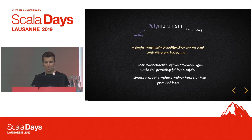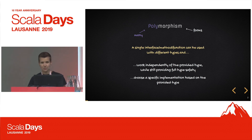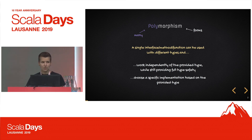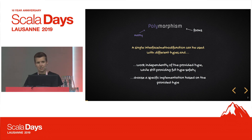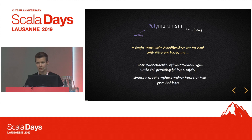To begin with, a short definition of the word polymorphism, which simply means many forms. This name refers to the fact that a single interface or method can be used with different types. And depending on the type of polymorphism, that method or interface acts either independently of the provided type — doing the same thing for all types while still maintaining type safety — or it could execute a different implementation depending on the provided type.